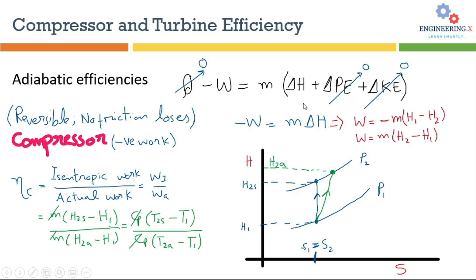On the other hand, the changes in potential energy and kinetic energy are negligible, so we can set those two terms to zero. The remaining equation becomes: work done equals mass flow rate times the change in enthalpy from point one to point two.